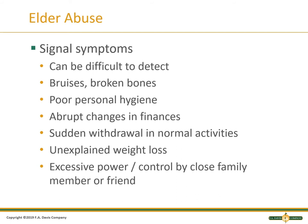Elder abuse signal symptoms can be very difficult to detect because, as they're older, you could say they fell, they have a bruise, a broken bone, poor personal hygiene — 'she won't let me help her wash.' Oftentimes you see an abrupt change in finances, a family dynamic change, someone in the family has passed away. There may be sudden withdrawal from normal activities, unexplained weight loss, or excessive power and control by a family member who won't let the patient answer for themselves.